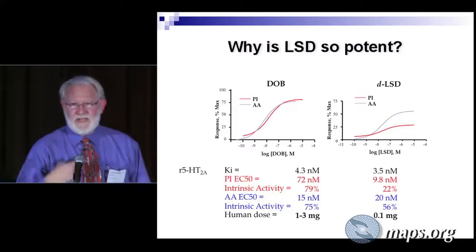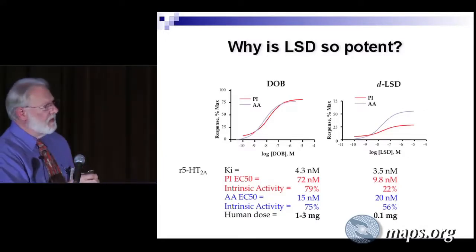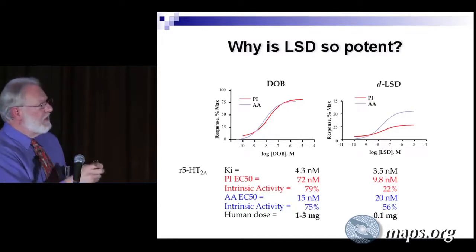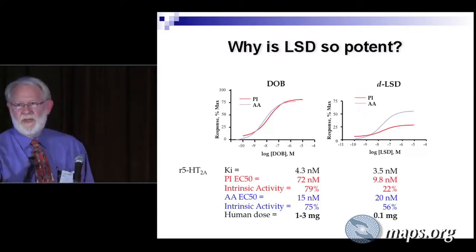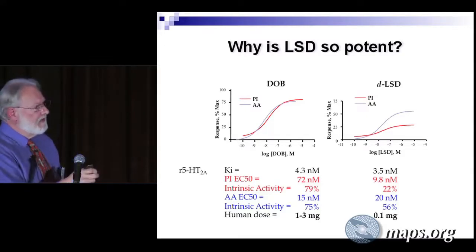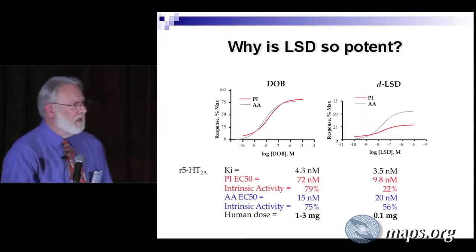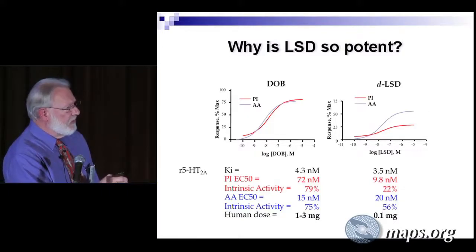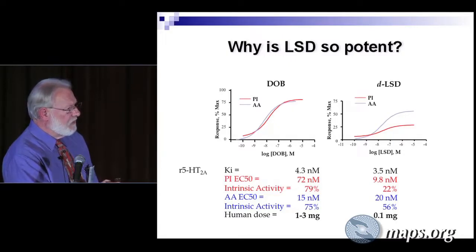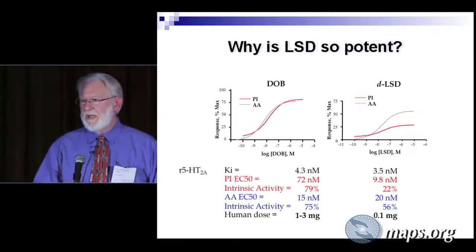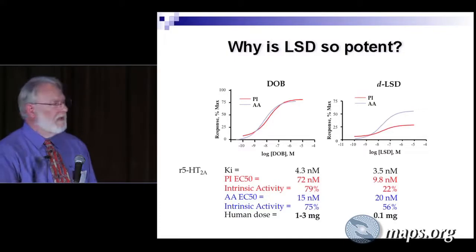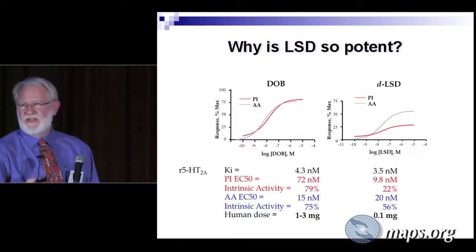The question I keep asking as a researcher is: why is LSD so potent? Here's DOB — a phenethylamine with a dose of maybe one to three milligrams. LSD's dose is a tenth to two-tenths of a milligram. Looking at receptor affinity, it's about identical. But DOB activates the receptor at 80% and 75% for the two pathways, while LSD achieves only 22% and 56% activation — LSD is really a rather weak compound in terms of activating that receptor. This is a puzzle that no one has been able to solve.